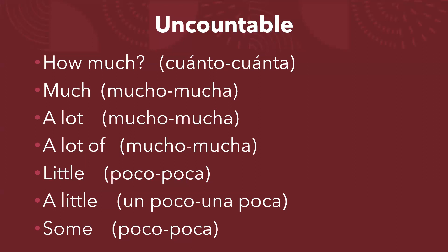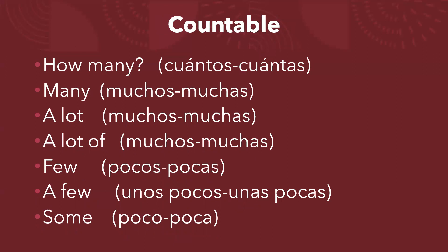Al pasar a countable, tenemos palabras que se usan para ambos casos: para hablar de gran cantidad son 'a lot of', y para cantidades pequeñas. Para countable usamos 'many' — la pregunta sería 'how many', cuántos o cuántas en plural. La respuesta sería muchos o muchas, y como en el ejemplo de los dólares, se puede incluso mencionar la cantidad exacta. Si no queremos mencionar la cantidad, usamos many para gran cantidad, o a few / few para unos pocos. Los que se pueden utilizar en ambos casos son a lot of y some.